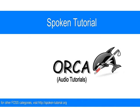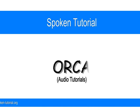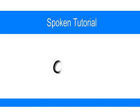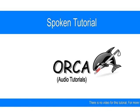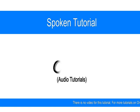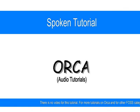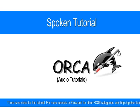Enable echo by word — enter Y or N. Now Orca is asking us if we want to hear back every word as it is typed. We will answer yes for this question. For this, enter the character Y.